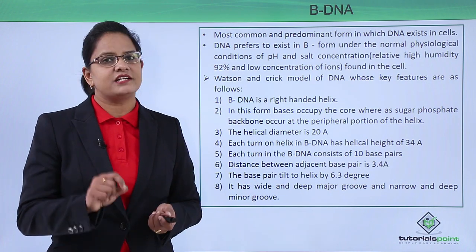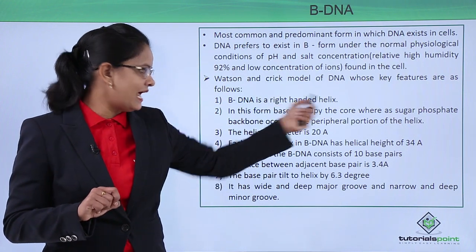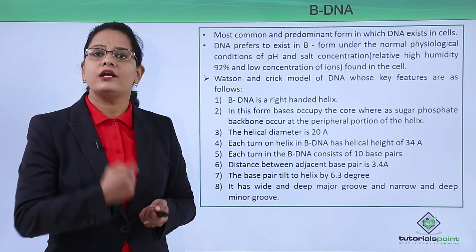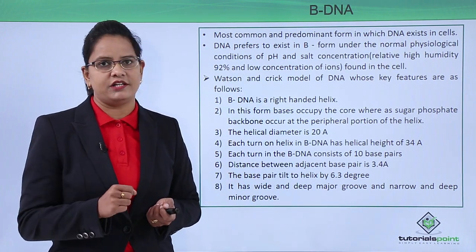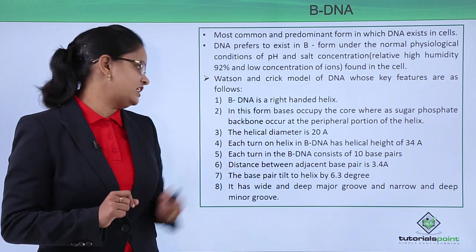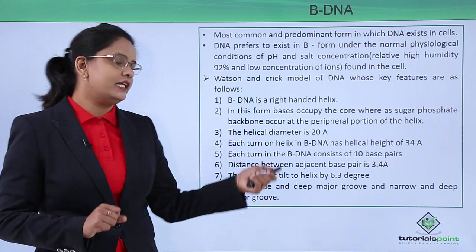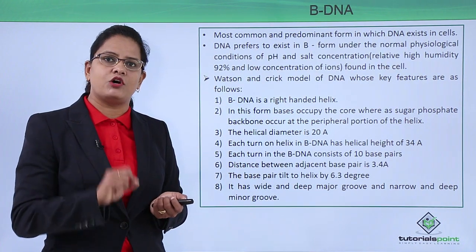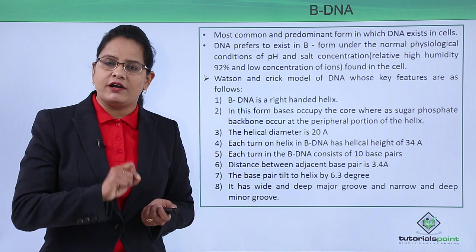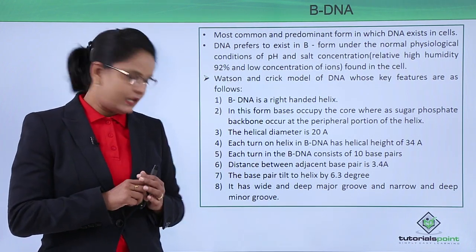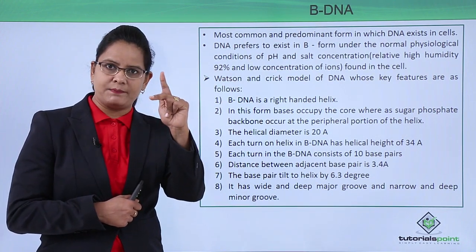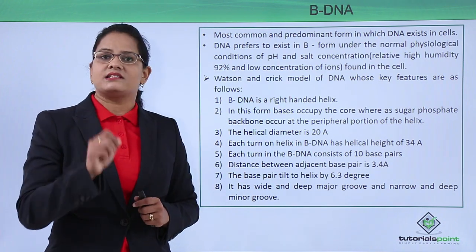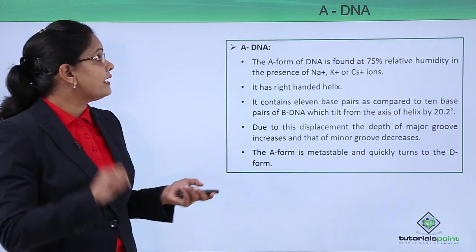The features of B-DNA: it has a right-handed double helix. The bases are present in the center occupying the core, while the phosphate and sugar are alternately arranged as backbones on the periphery. The diameter of the helix is 20 Ångströms, each turn is 34 Ångströms, with around 10 base pairs per turn. The distance between two base pairs is 3.4 Ångströms, and the bases are tilted from the helix axis by around 6.3 degrees. There is a wide and deep major groove and a narrow and deep minor groove.